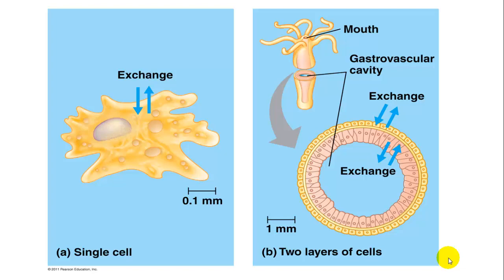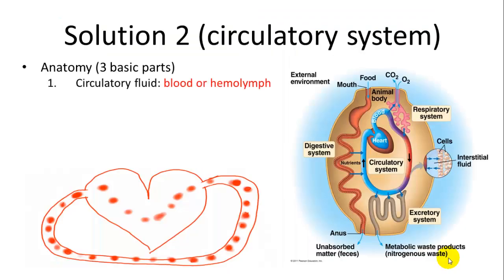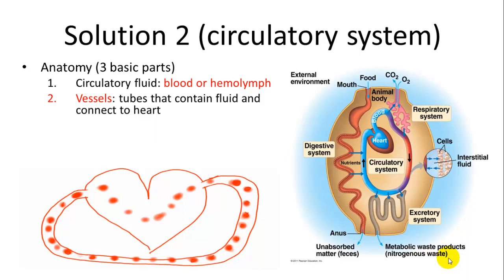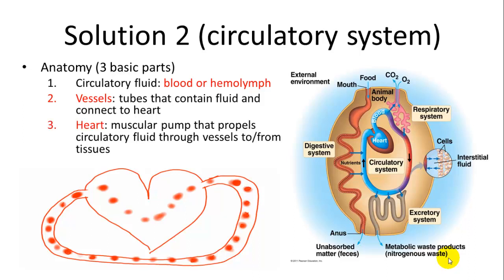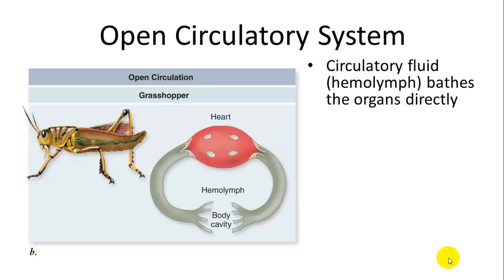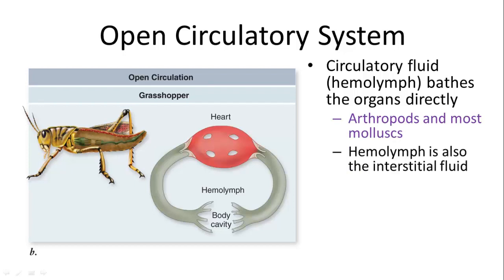The other solution is a circulatory system, which has three basic parts: circulatory fluid (blood or hemolymph), vessels which contain the fluid, and a heart to pump it throughout the body where it can exchange with respiratory surfaces and tissues. There are two types of circulatory systems. In an open circulatory system, the hemolymph bathes organs directly and not all of the blood is contained within blood vessels. Arthropods and most mollusks have this system, where hemolymph is also the interstitial fluid.